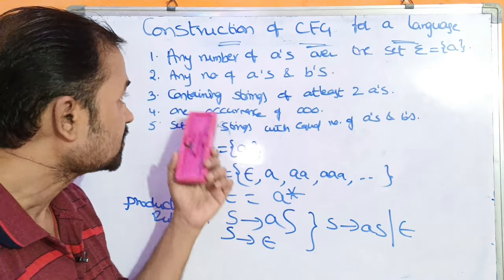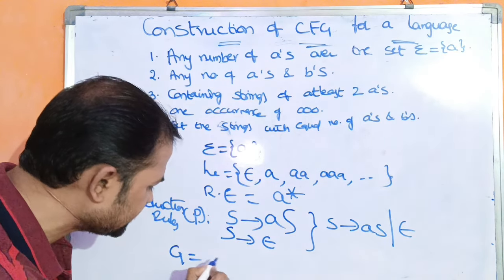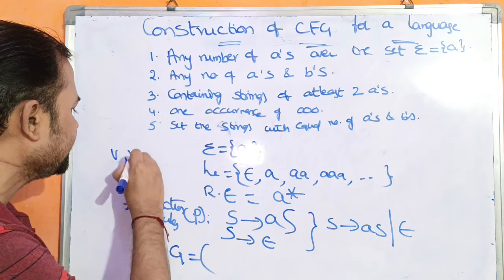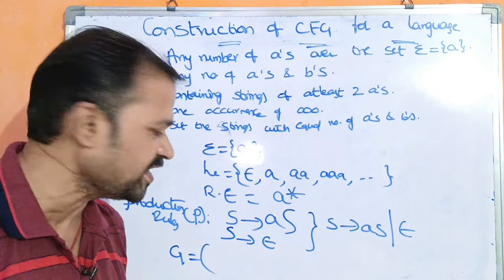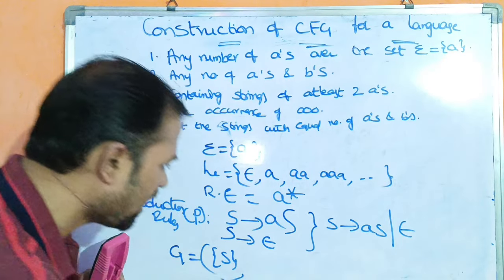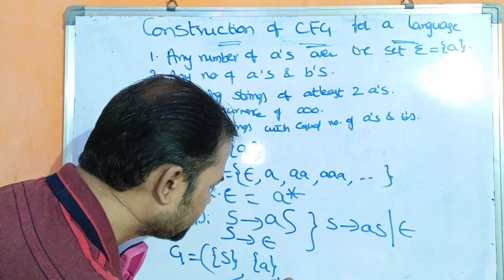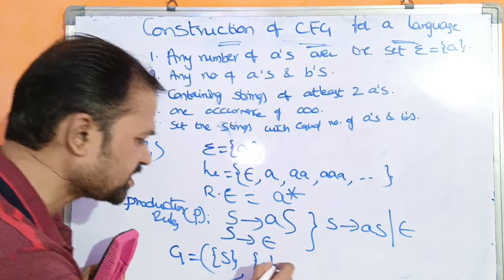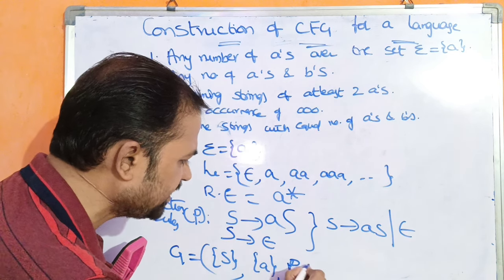Now let us write the context-free grammar. CFG is represented as G = (V, Σ, P, S), where V means variables or non-terminals. Here the non-terminal is S. The terminal is A. We have two production rules denoted by P, and the starting symbol is S.